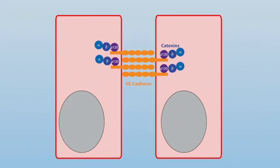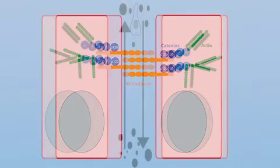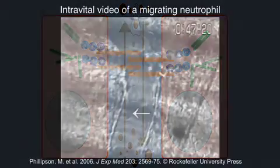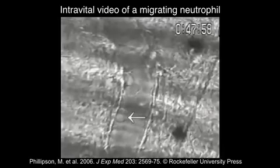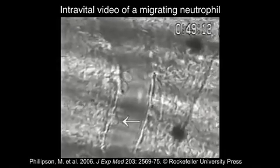Beta and alpha-catenin. These junctions can be leaky in diseases such as atherosclerosis, but they are also transiently disrupted during normal physiological processes like angiogenesis, or when leukocytes move from the bloodstream into infected tissues.